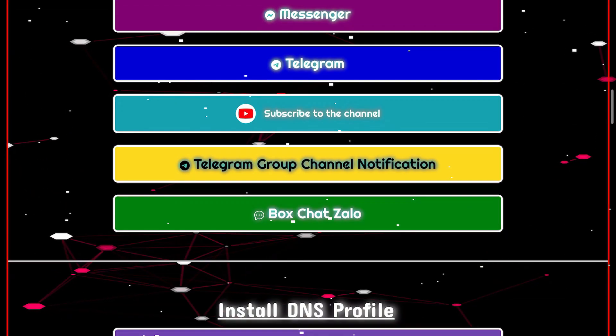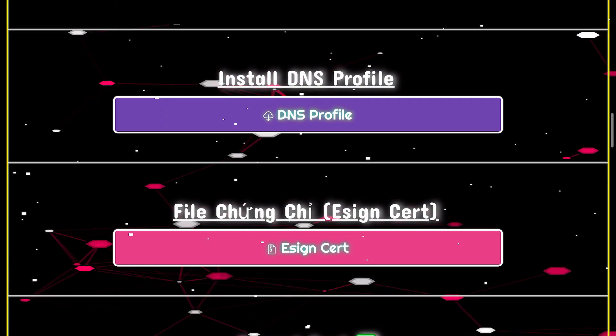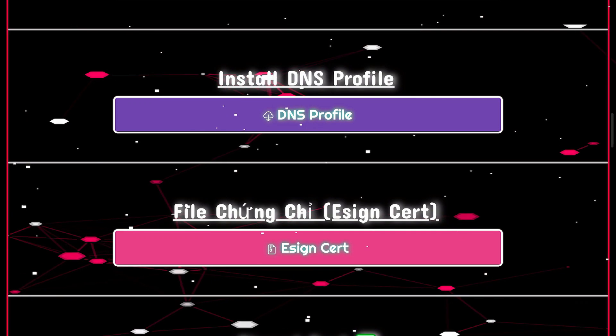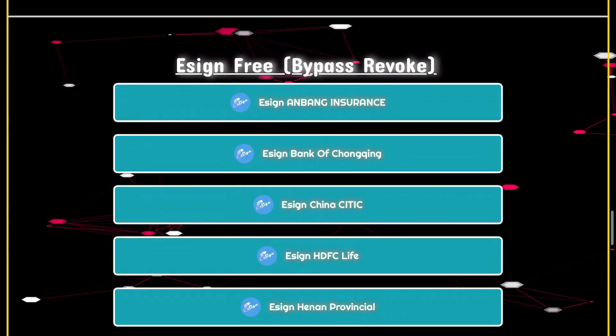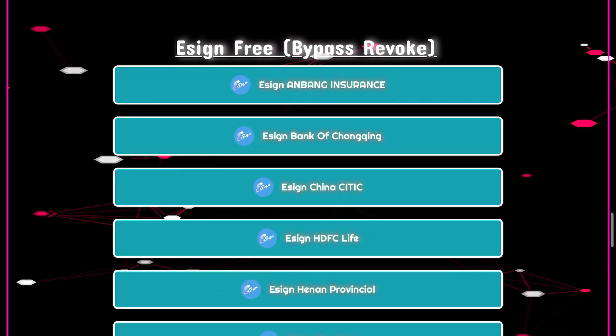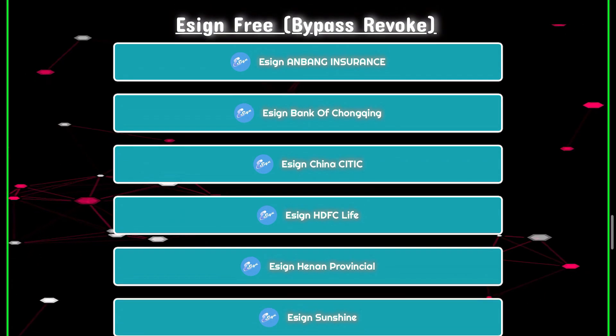Scroll down. We have already set up the DNS, so we don't need to install the DNS profile here. We're going to find the eSign. Here — eSign free bypass revoke. You can install eSign from here.